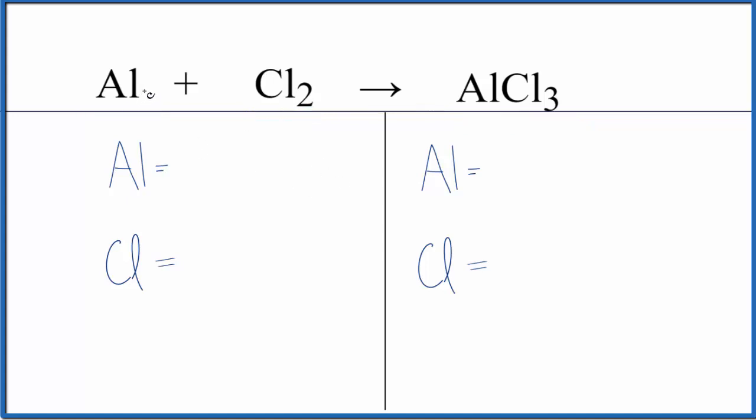So let's count the atoms up. One aluminum, two chlorines. Product side, one aluminum, three chlorines.